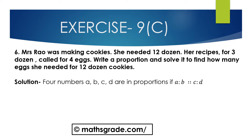Now we will solve question number 6. Mrs. Rao was making cookies. She needed 12 dozen. Her recipe for 3 dozen called for 4 eggs. Write a proportion and solve to find how many eggs she needed for 12 dozen cookies. For the recipe, 3 dozen cookies need 4 eggs. We have to find out how many eggs she needed for 12 dozen of cookies.